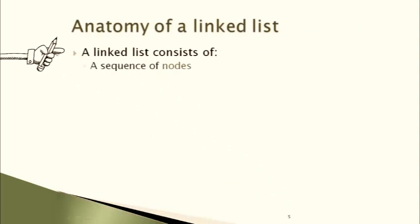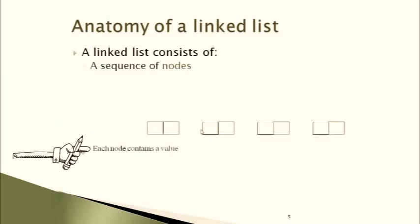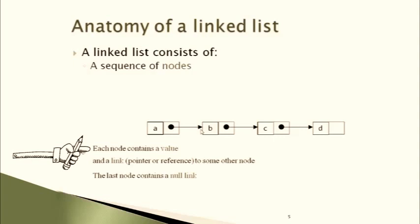A linked list consists of a sequence of nodes. You can see there are two buckets in each node — one is for the actual value you want to store, and the second is for storing a link to the next bucket. Each node contains a value — A, B, C, D — and a link that is a pointer or a reference to the next node. The last node contains a null link, meaning it is not pointing to anything.